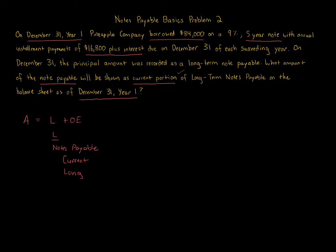Current versus long-term: current is due within one year or less of the balance sheet date. The balance sheet we're asked about is as of December 31st, Year 1. A balance sheet is a snapshot — like taking a picture of the company's assets, liabilities, and owner's equity on that specific date. The total notes payable on December 31st, Year 1 is $84,000, and none of the installment payments have yet come due.